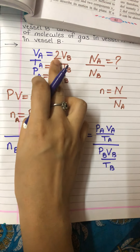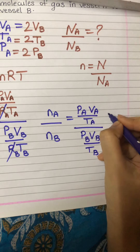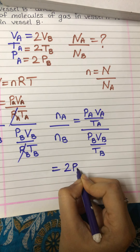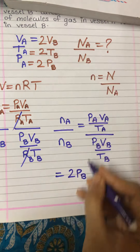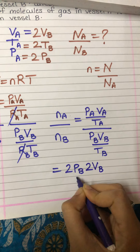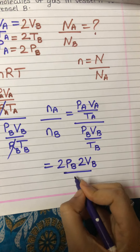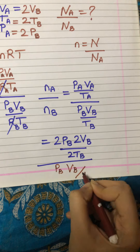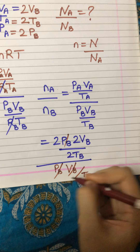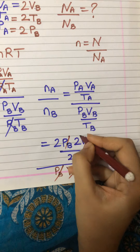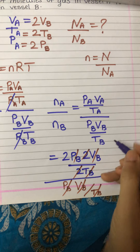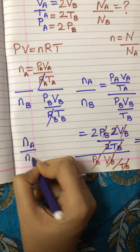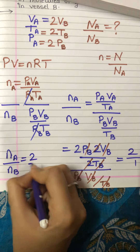Now applying the given conditions: VA equals 2VB, PA equals 2PB, and TA equals 2TB. Substituting: we get 2PB times 2VB upon 2TB, divided by PB·VB upon TB. The PB, VB, and TB terms cancel out, and the factor of 2 in the numerator and denominator also cancels, leaving 2 upon 1. So NA upon NB equals 2 upon 1.